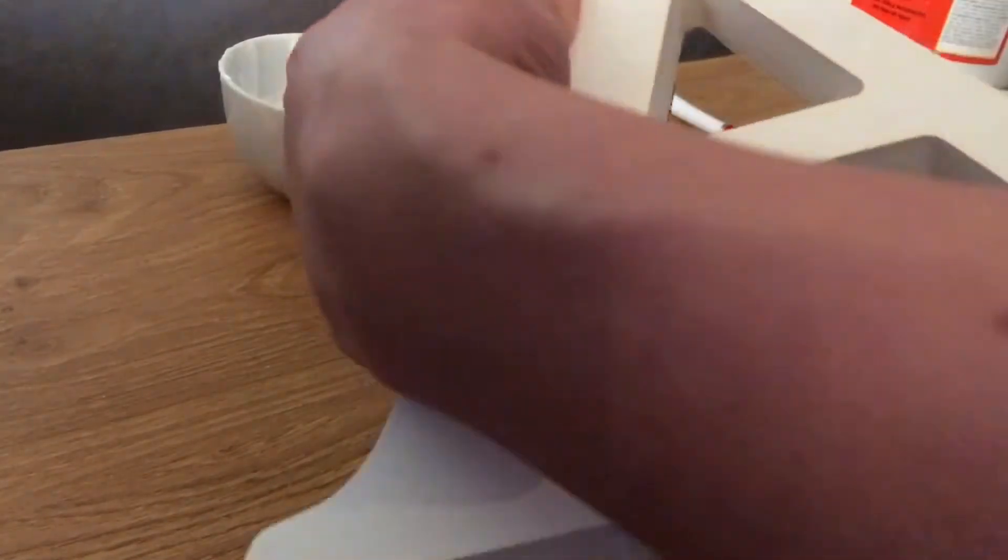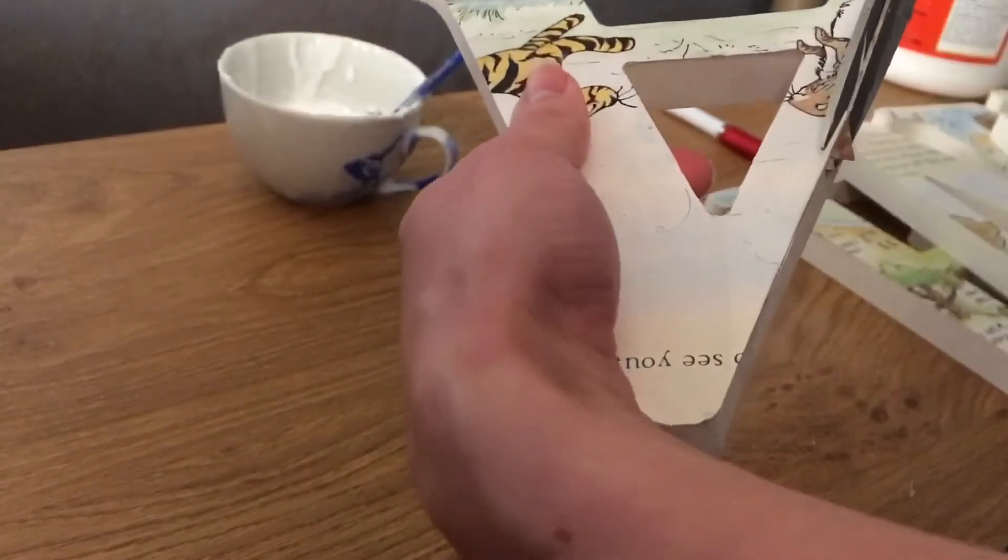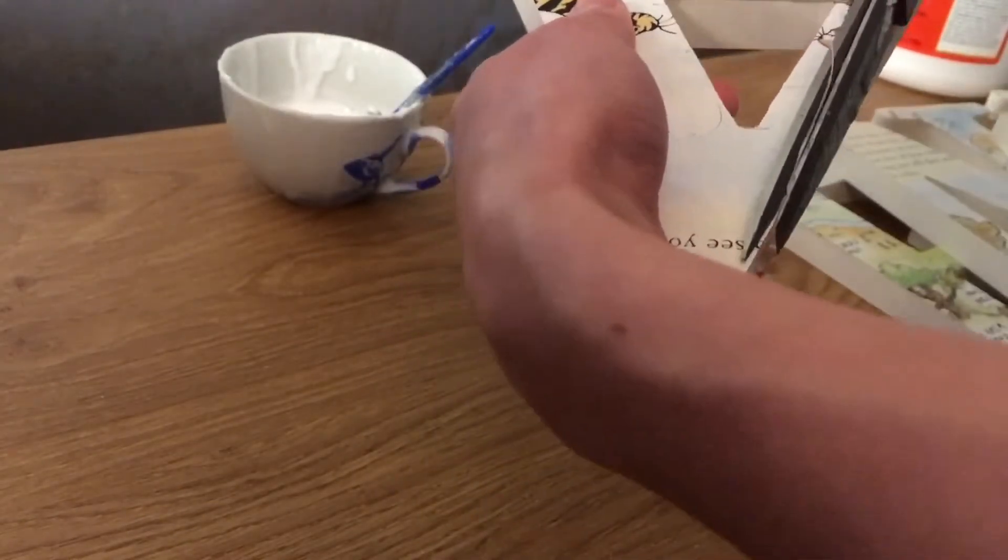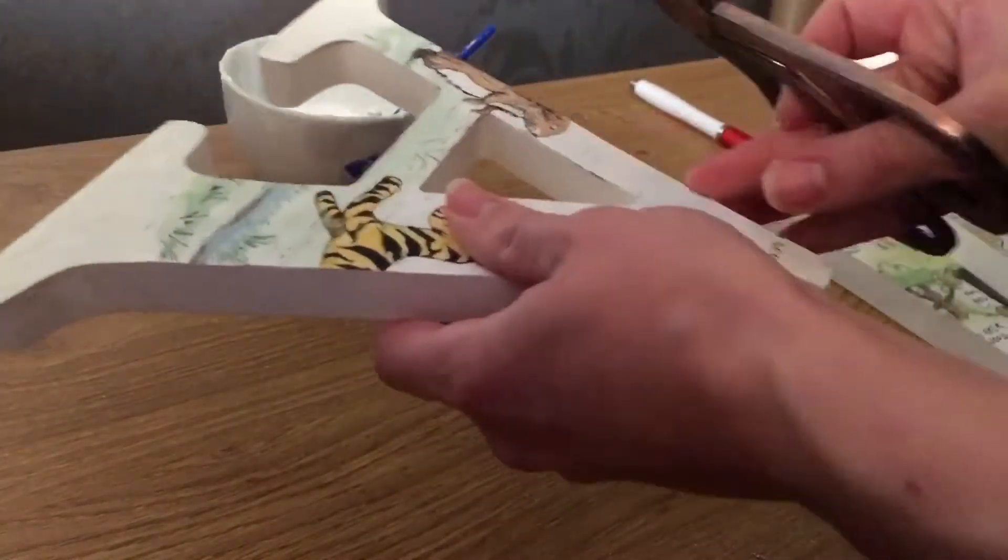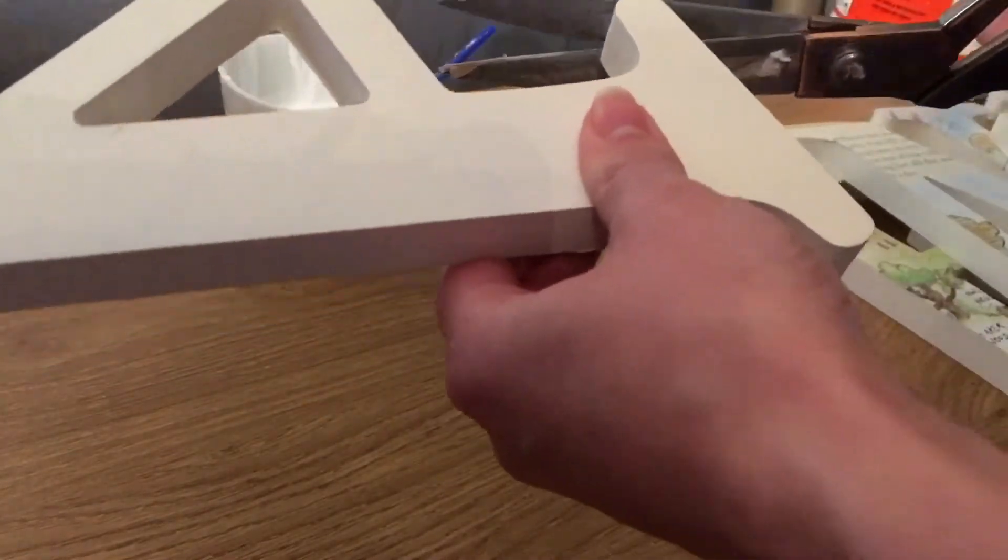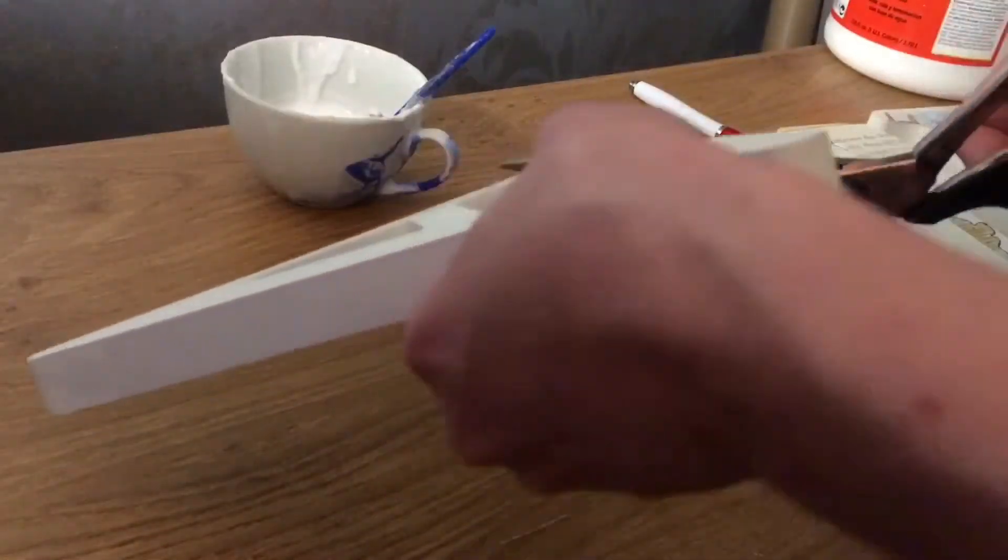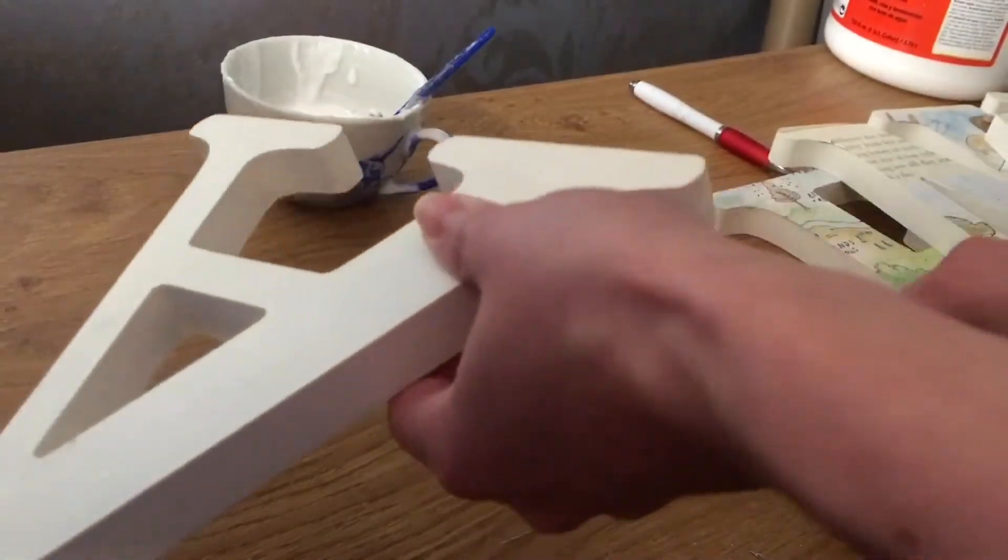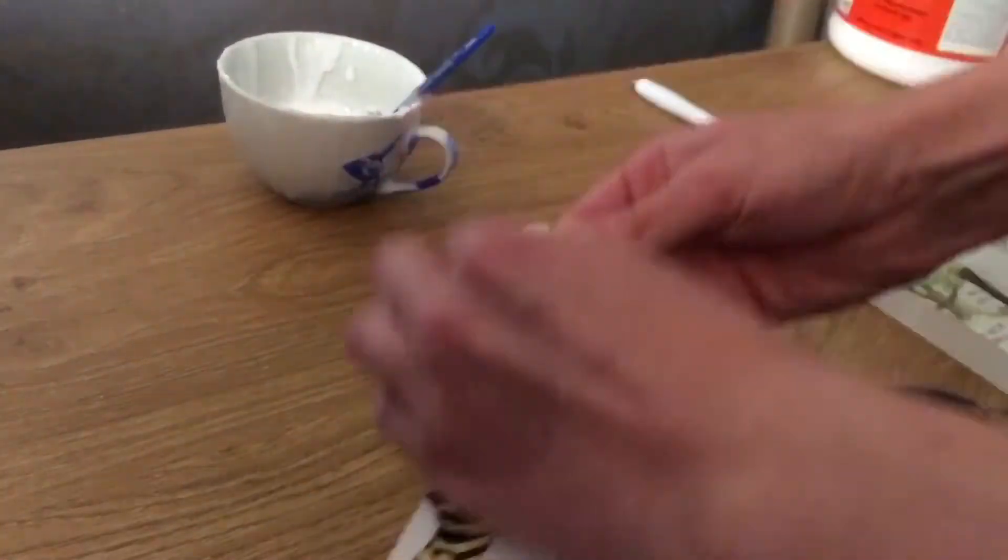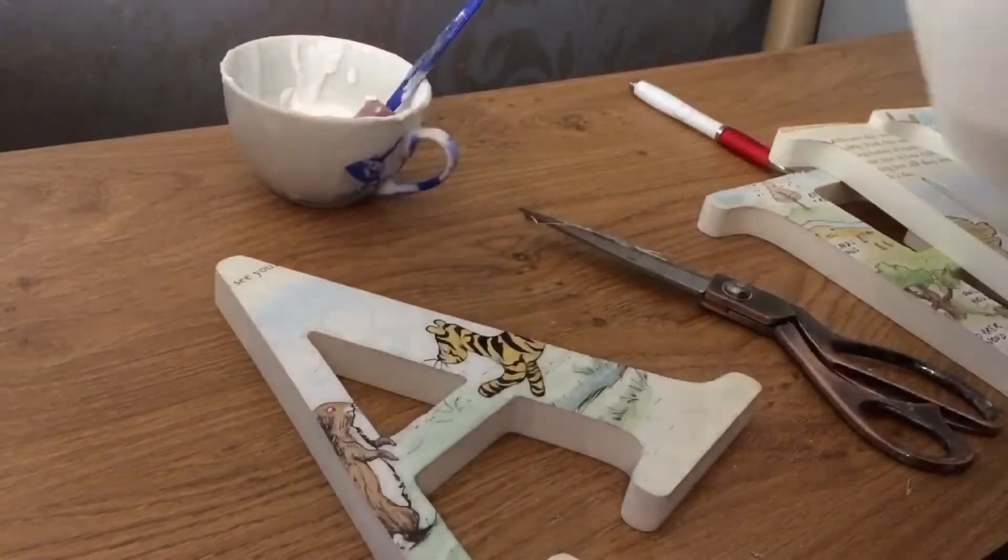Once that's done, you want to give your letters another little trim. Make sure that you're happy with what you've cut off and what's left. You don't want loads to be hanging over the edge.